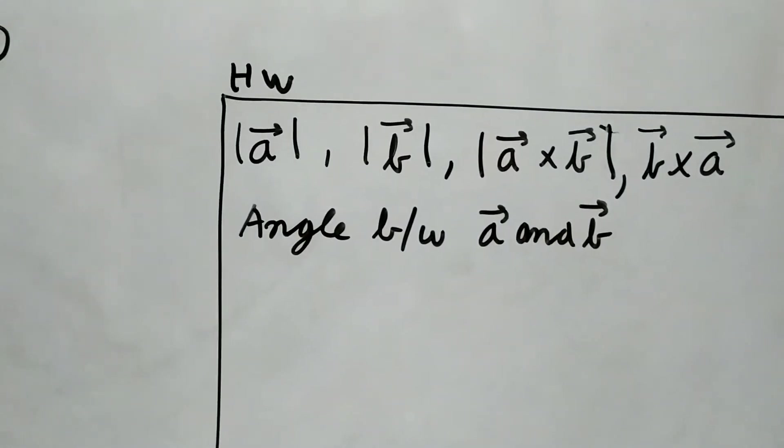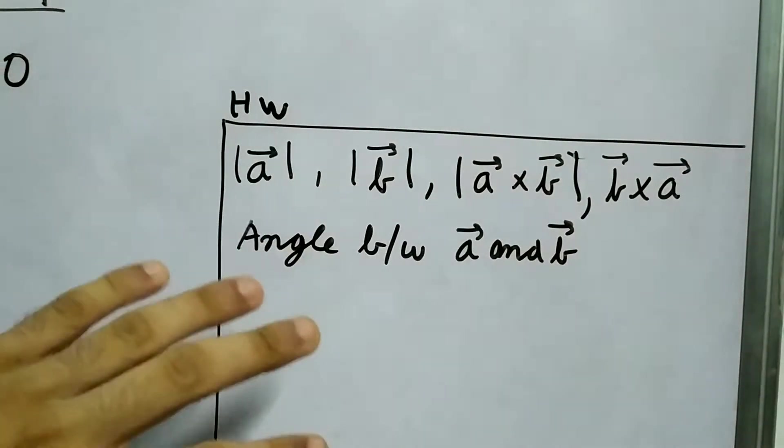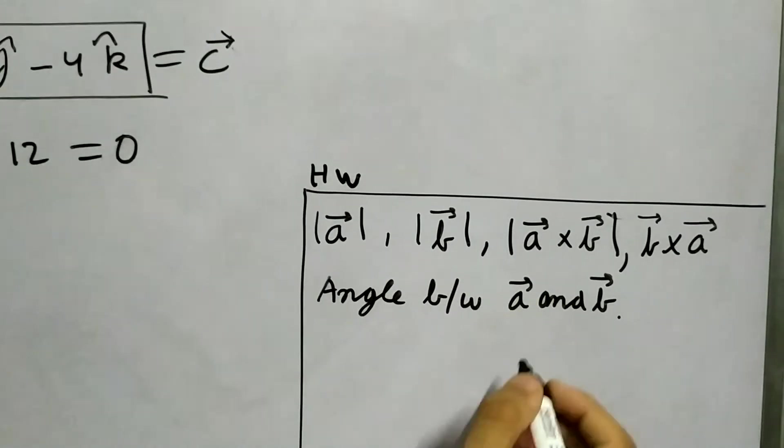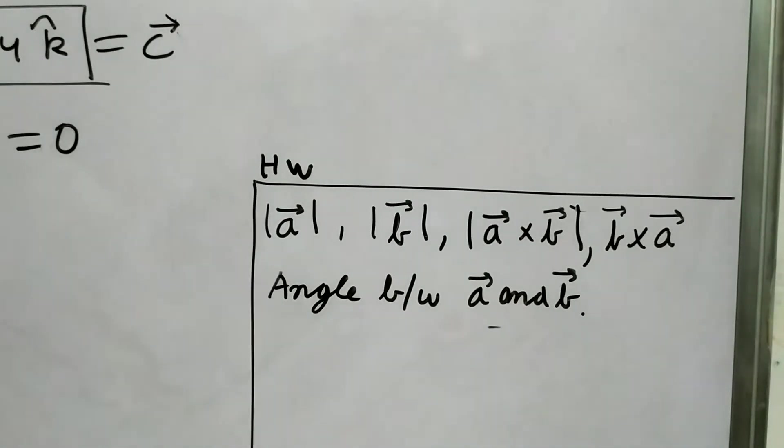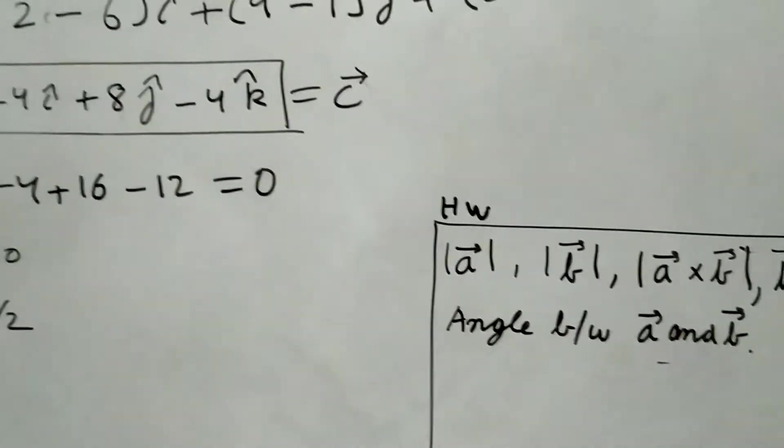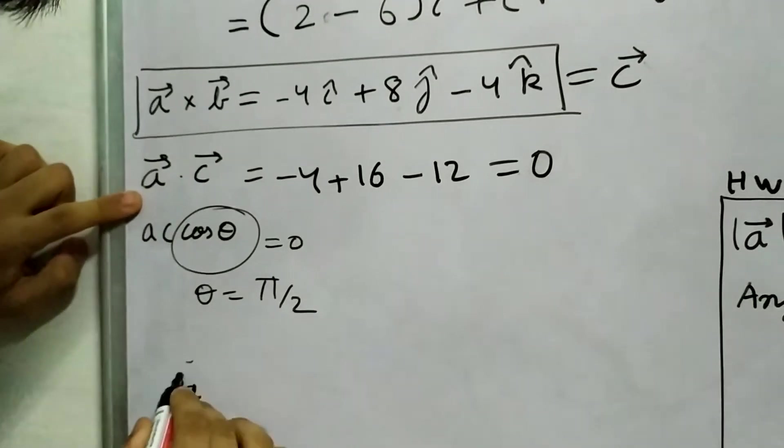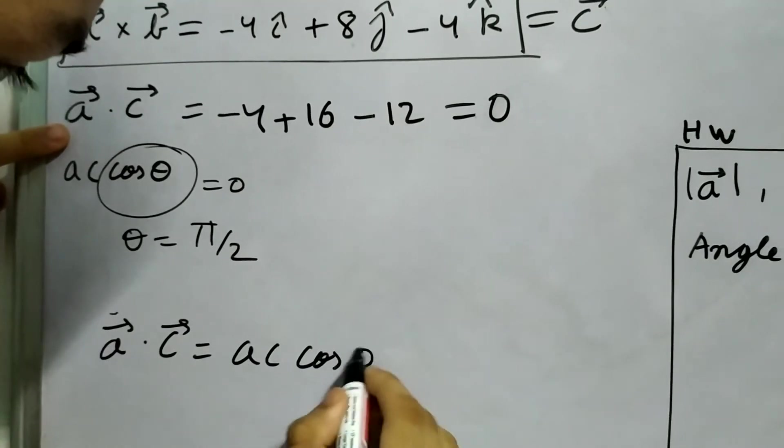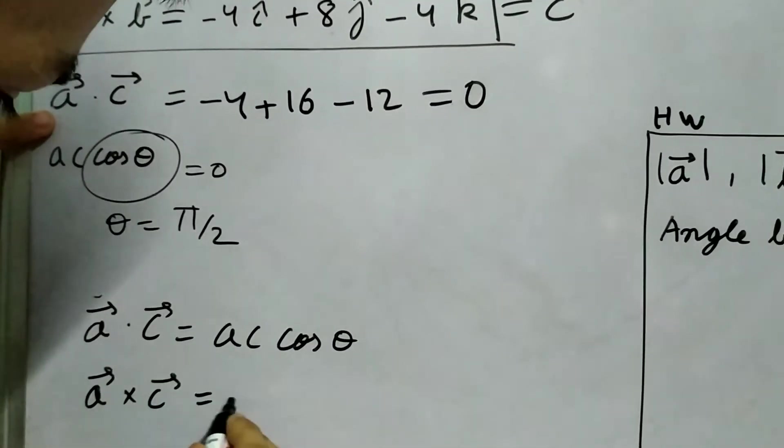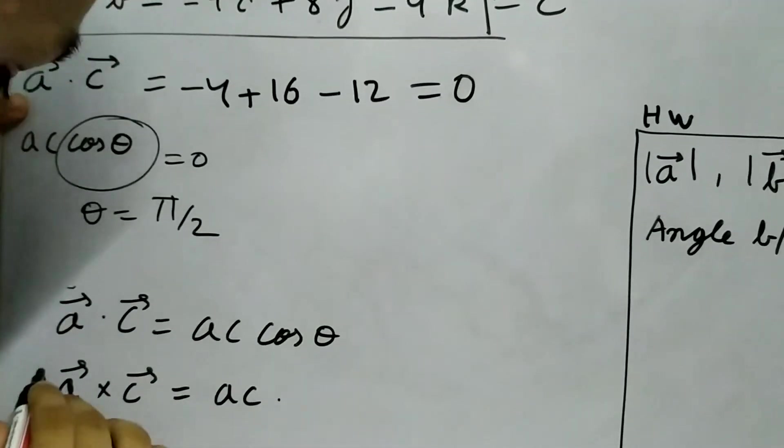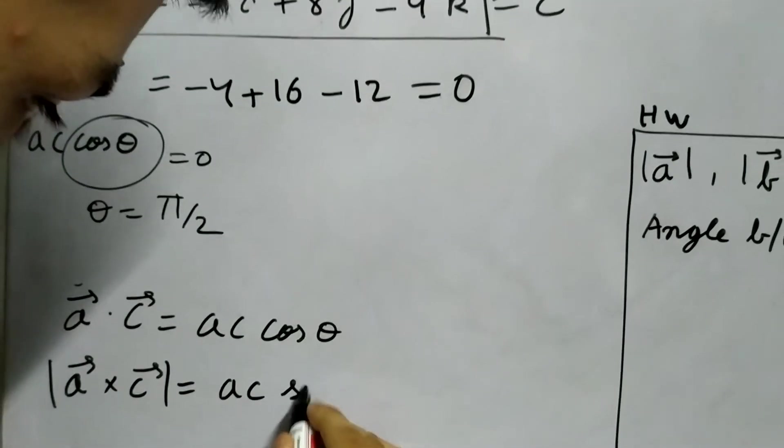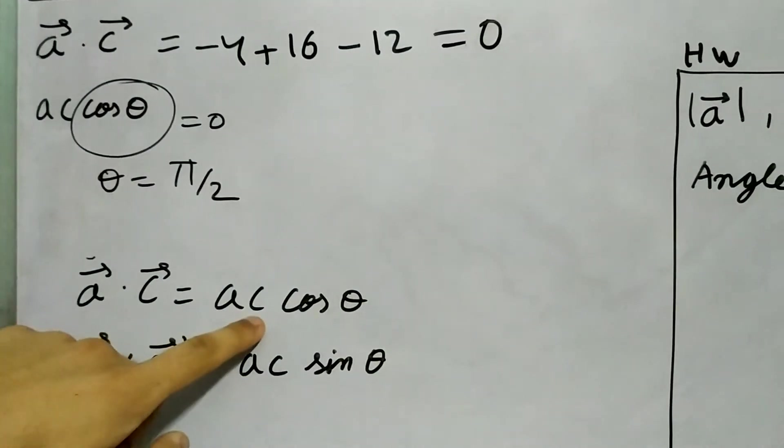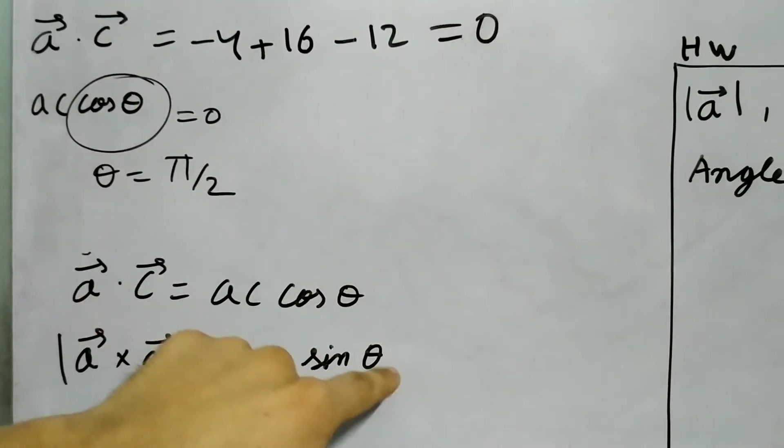And find the angle between A and B. Now pause this video and try to answer them and write your answers in the comment section. So if you want a hint to evaluate this angle between them, then use these properties, the formulae for them. A dot C is A C cos theta, and A cross some vector C is A C sin theta. So once you know the magnitudes of all of them, you can evaluate the theta.